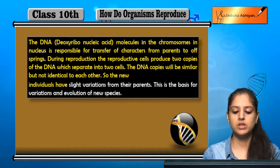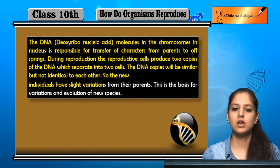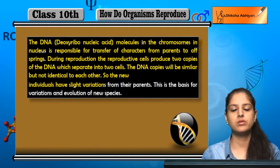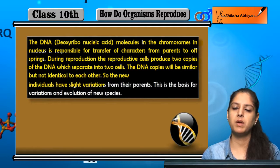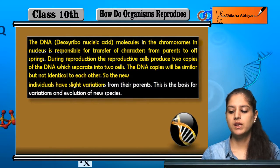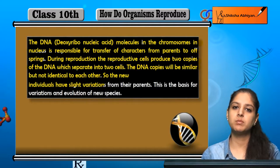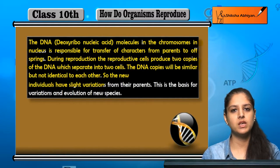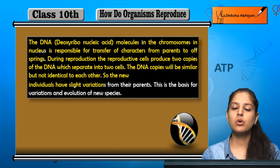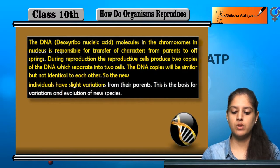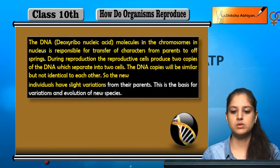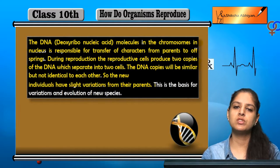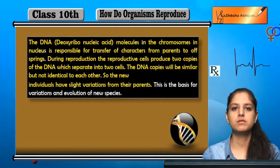Jo new individuals hote hain, unme kuch variations reh jate hain. Agar ek dam perfect tarike se copy ho jai, toh koi bhi alag cheez nahi hogi — parent mein bhi aur offspring mein bhi. Lekin kyunki yeh dho copies similar hoti hain lekin identical nahi hoti — matlab 100% copy nahi hoti — so jo kuch cheezein reh jati hain copy hona, wohi variations ko produce karti hain. So parents se jo offsprings hoti hain, woh kuch alag hoti hain, aur unko hum kehte hain variations.